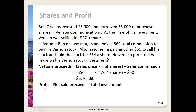Next we calculate the profit. We take the net sale proceeds we just identified and subtract our total investment. Taking $6,765.60 minus $6,000 — the amount Bob had plus the amount he borrowed to purchase — gives us a profit of $765.60.